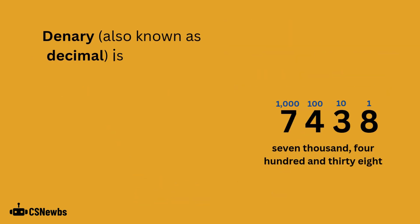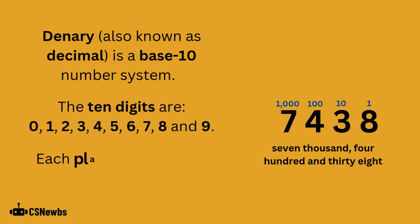Denary, also known as decimal, is a base 10 number system. The 10 digits are 0 to 9. Each place is a power of 10.